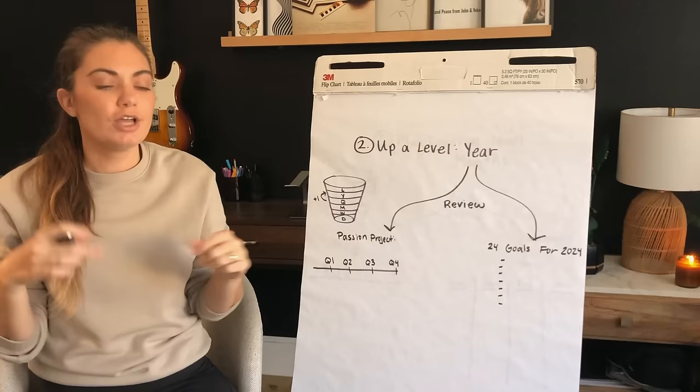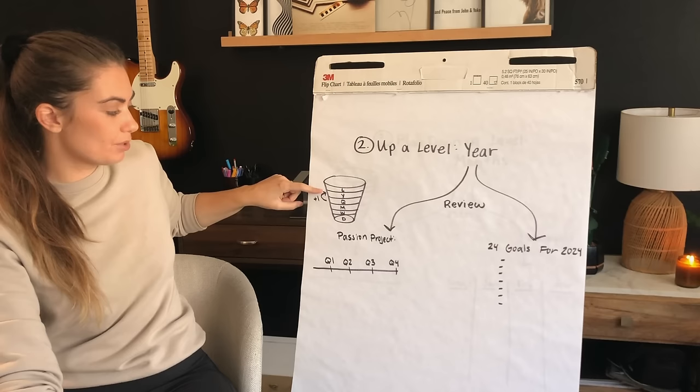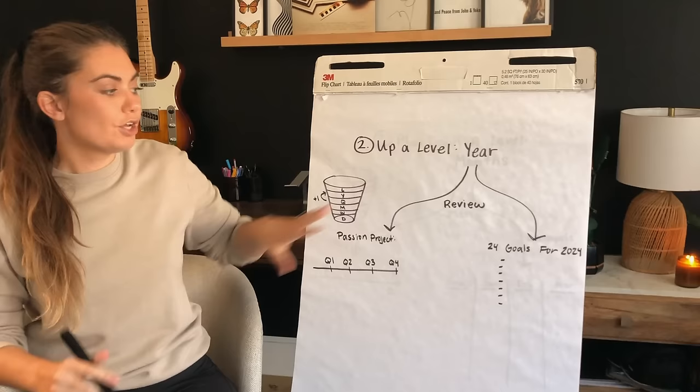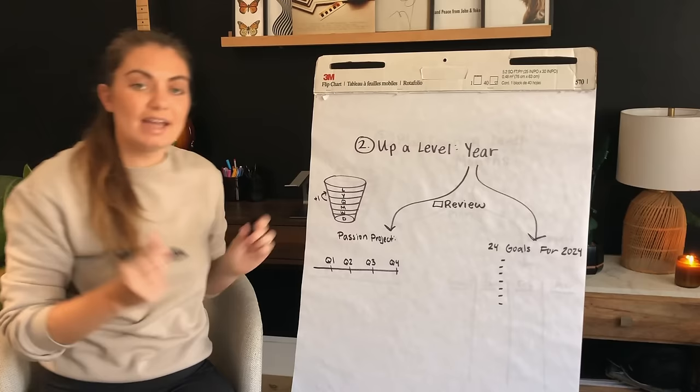No matter what type of planning I'm doing — in this case, quarterly planning, the 12-week sprint — I always go one level up. In this case, it's going up and looking at the yearly level. What did I plan for myself at the start of the year? So I go back and review my yearly work — what did I envision for myself at the start of this year? In this planner, I would go to the front and look at all the things I set for myself this year.